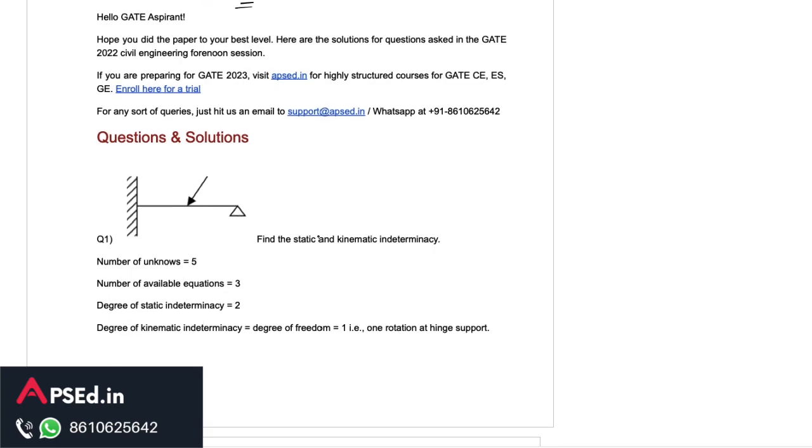This first one is asking for static and kinematic indeterminacy for this propped cantilever and they have given this inclined load. In that case we will have all the unknowns possible at both of these joints. For static indeterminacy we know we will have three unknowns at the fixed support that is the reactions and moment and two unknowns at the hinge support that is these two reactions. We have five unknowns and we will have three equilibrium equations so we get static indeterminacy as two.